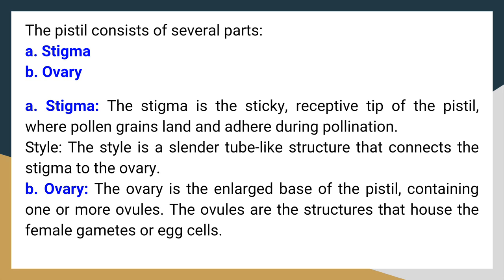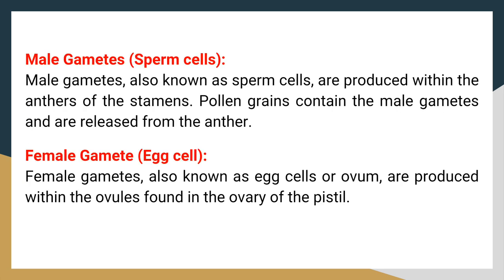The pistil consists of several parts. The stigma is the sticky, receptive tip of the pistil where pollen grains land and adhere during pollination. The style is a slender tube-like structure that connects the stigma to the ovary. The ovary is the enlarged base of the pistil, containing one or more ovules, which house the female gametes or egg cells. Male gametes, also known as sperm cells, are produced within the anthers of the stamens. Female gametes, also known as egg cells or ovum, are produced within the ovules found in the ovary of the pistil.